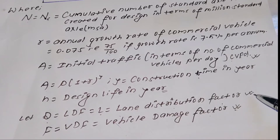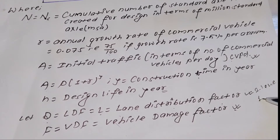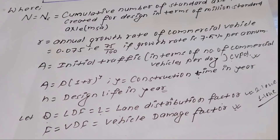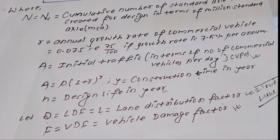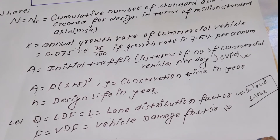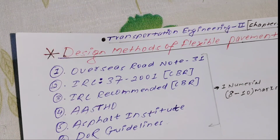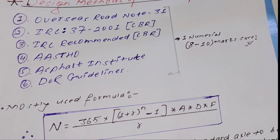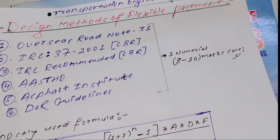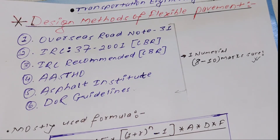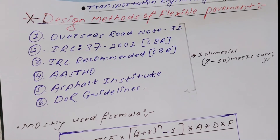The lane distribution factor applies to single or two-lane roads. For a single lane, one value is used; for two lanes, a different value applies. This factor must be included when solving numericals — it is described in the method of flexible pavement design. Old questions will be covered in the next video.